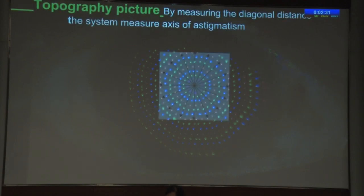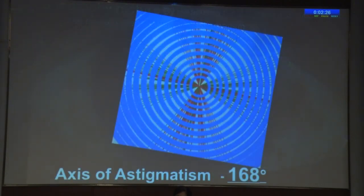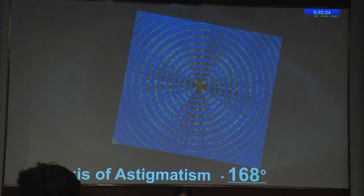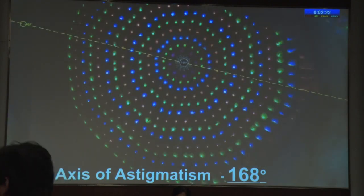By measuring the diagonal distance between these points, the system measures the axis of astigmatism, which is 168 degrees in this case. Unlike other solutions, in this system there is no absolute need to keep the head perfectly straight.